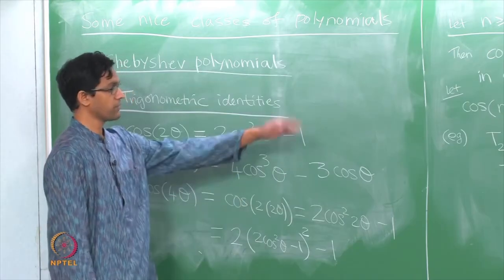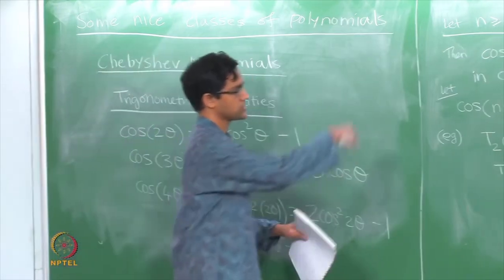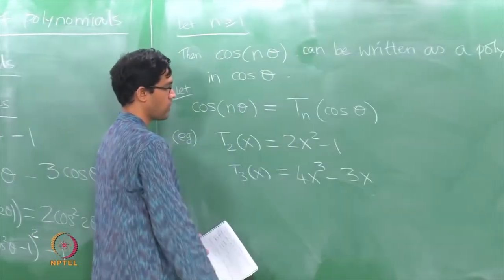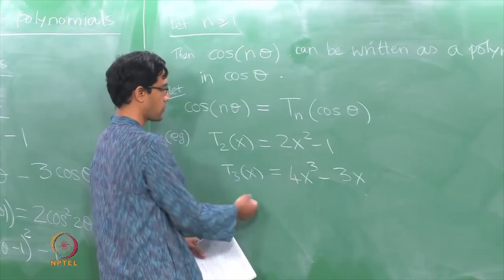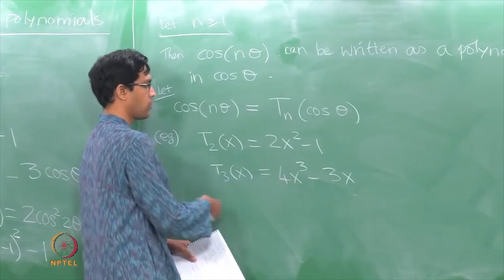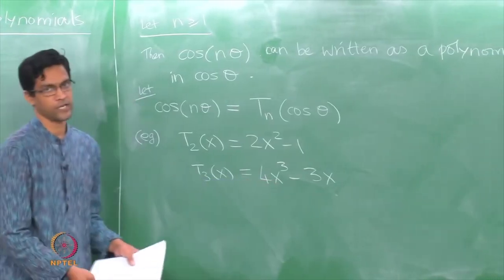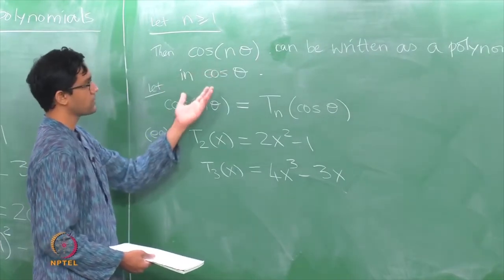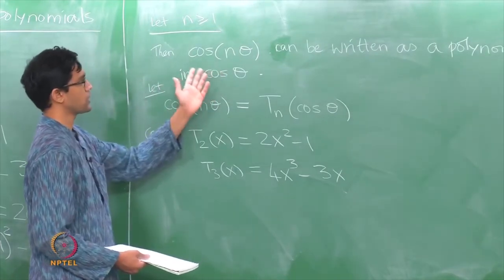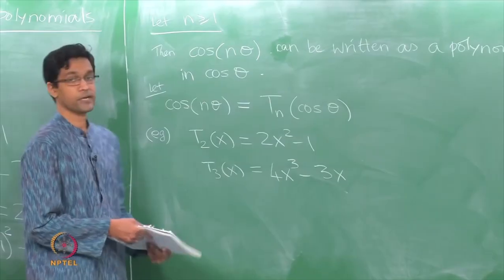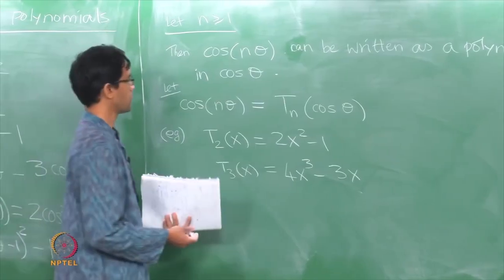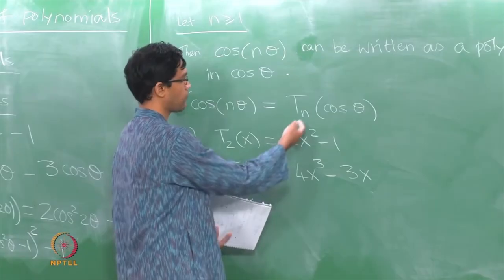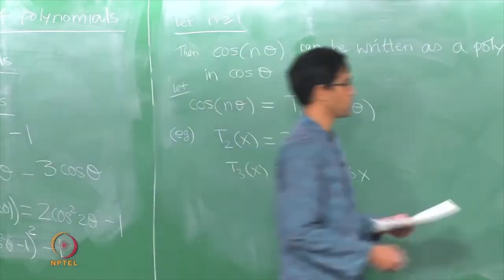In general, there is a sequence of polynomials T_0, T_1, T_2, T_3, T_4 and so on, such that if you put cos theta in place of x, what you get is exactly the value of cosine n theta. First let us see why this statement is even true — why cosine of n theta can be written as a polynomial in cos theta — and simultaneously what these polynomials T_n look like.